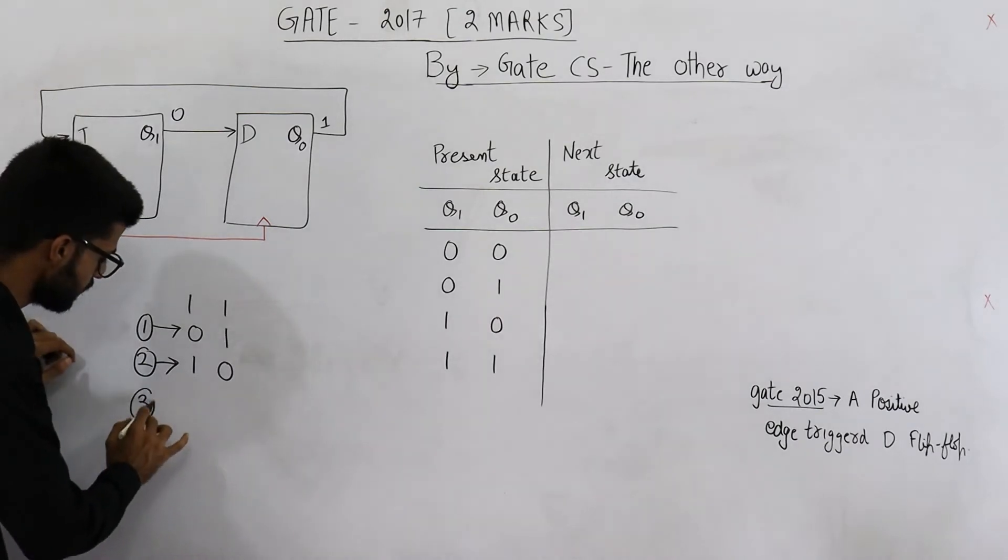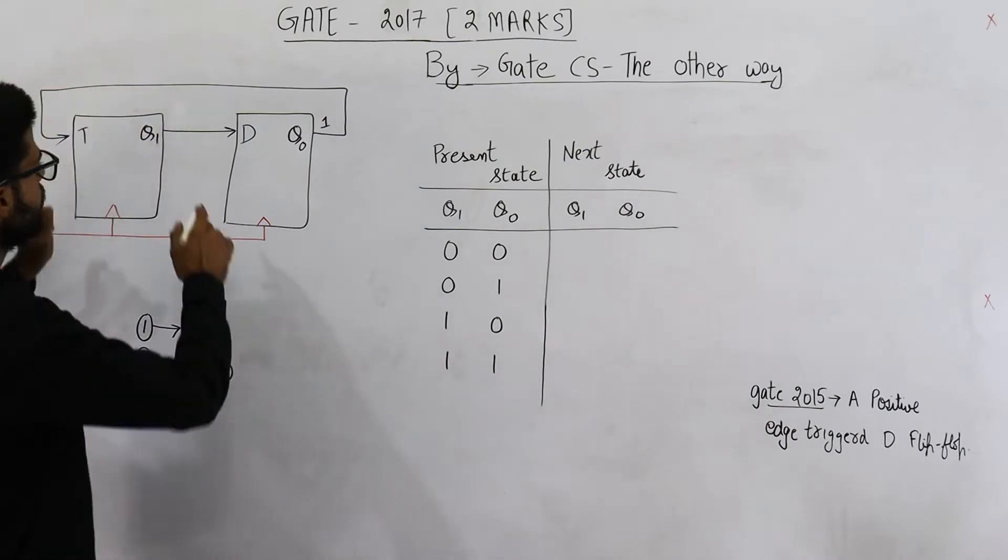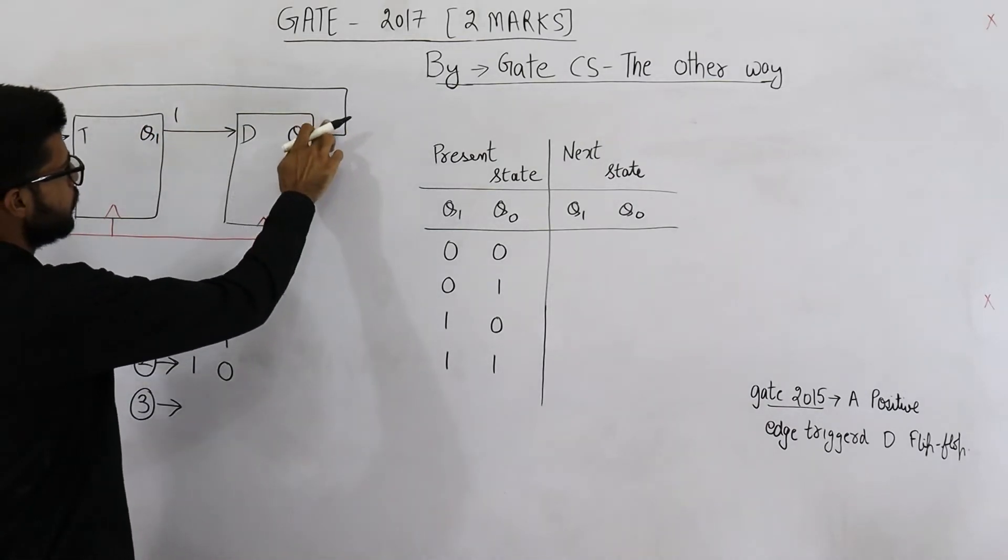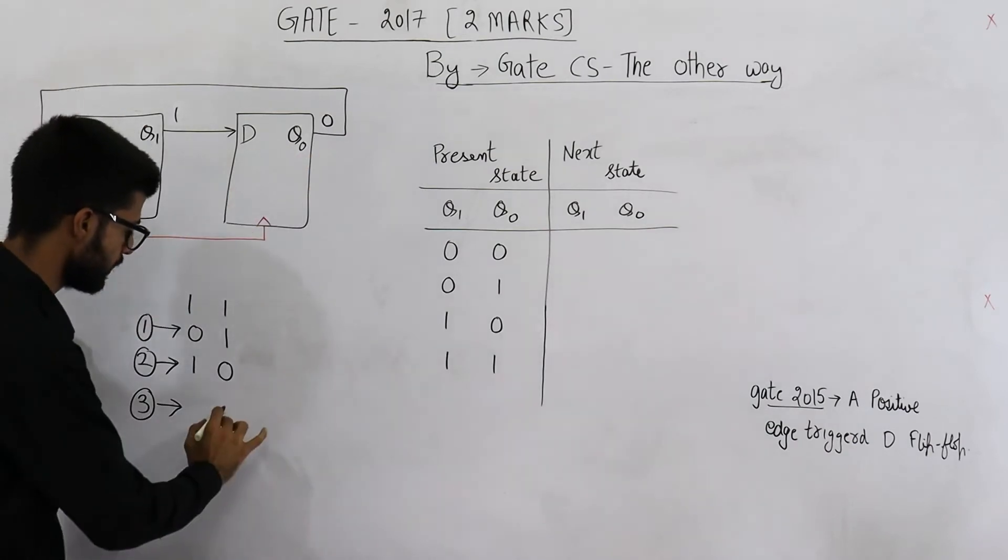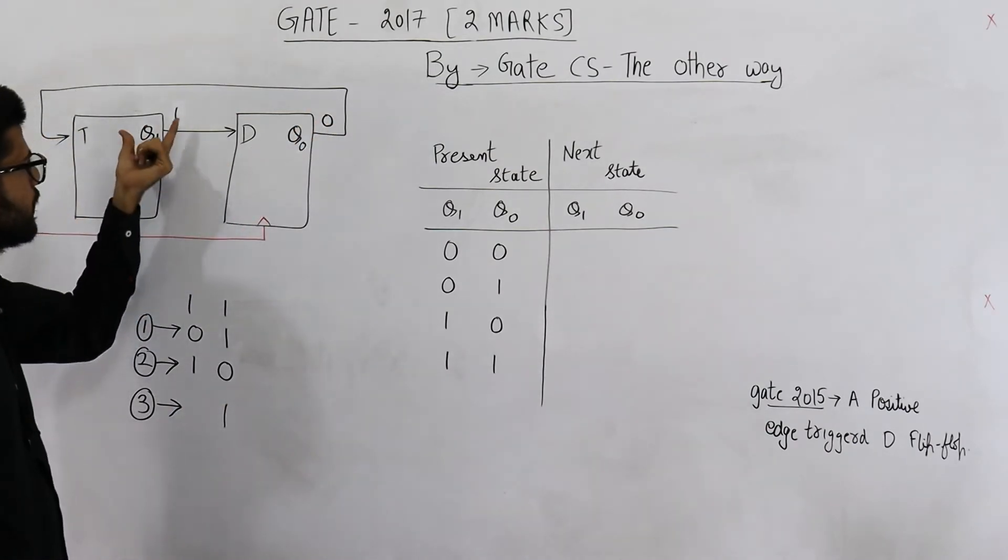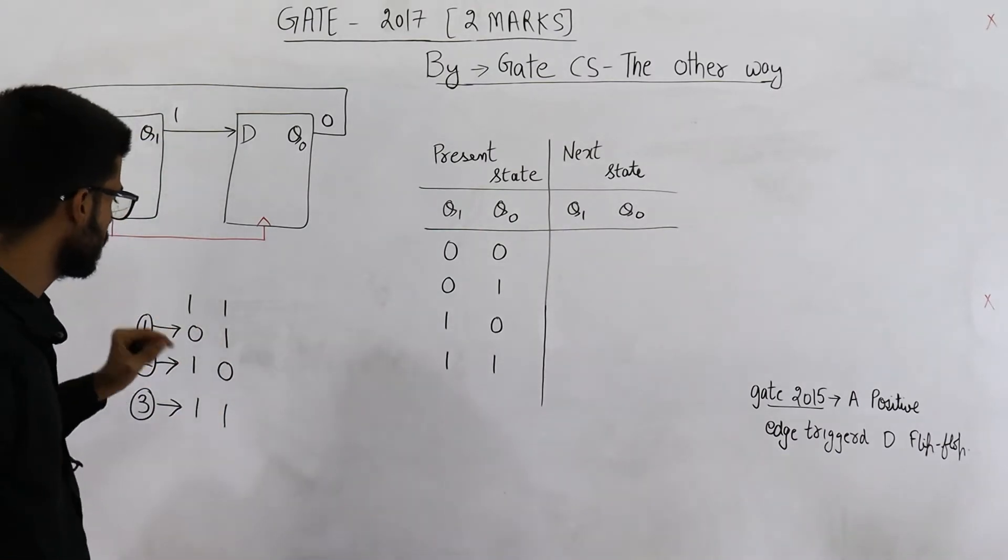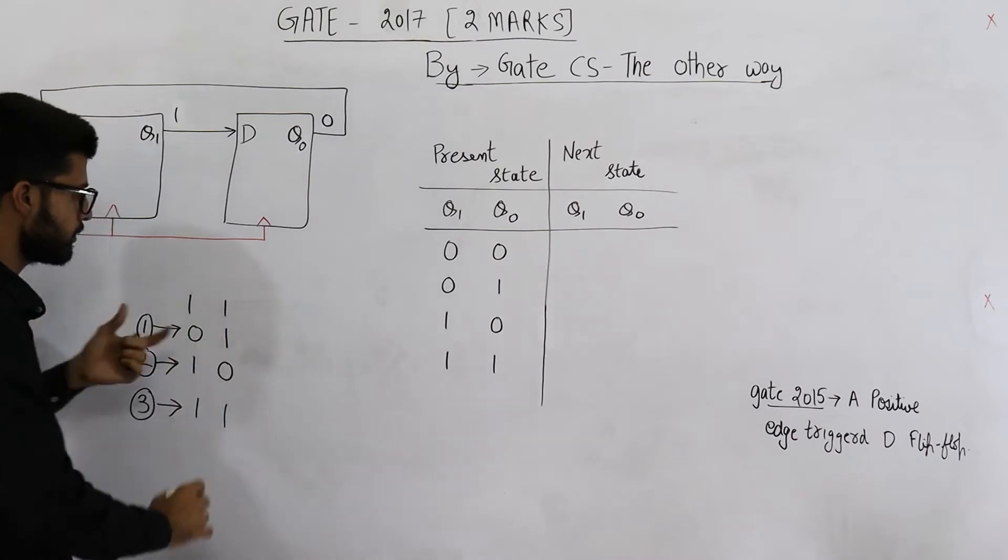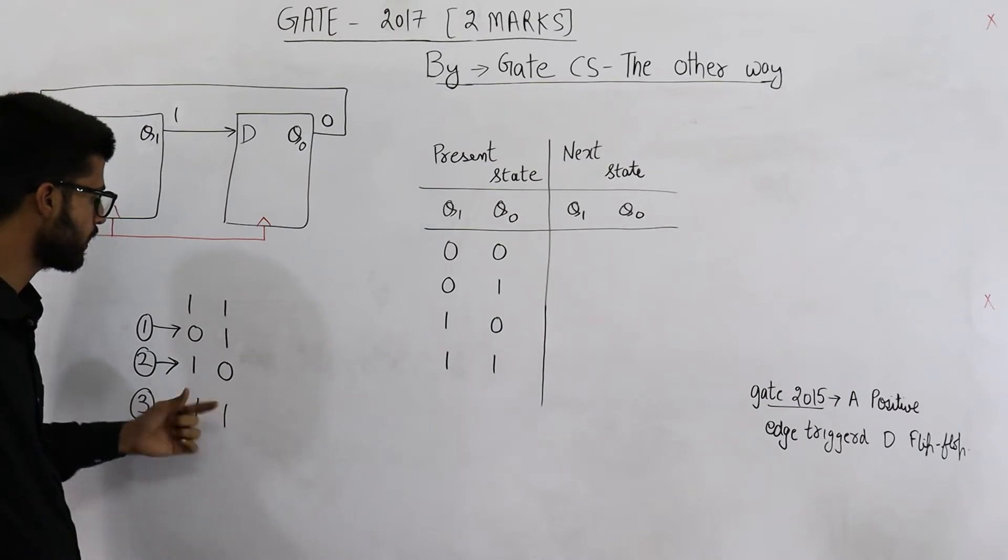After giving third clock, now the values are 10. This one will shift here, so I'm writing 1. This is 0, that means this T will not toggle. Whatever is the current value will remain as it is like this. So you can see starting from 11, next state is 01, then 10, then we came back to 11 only.